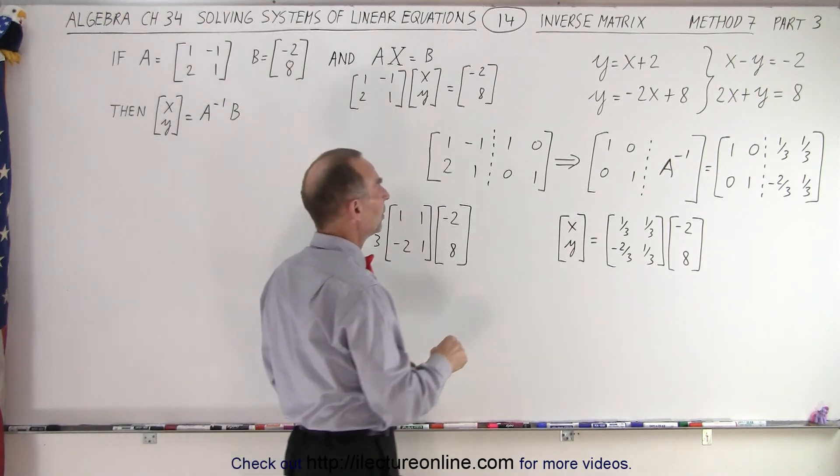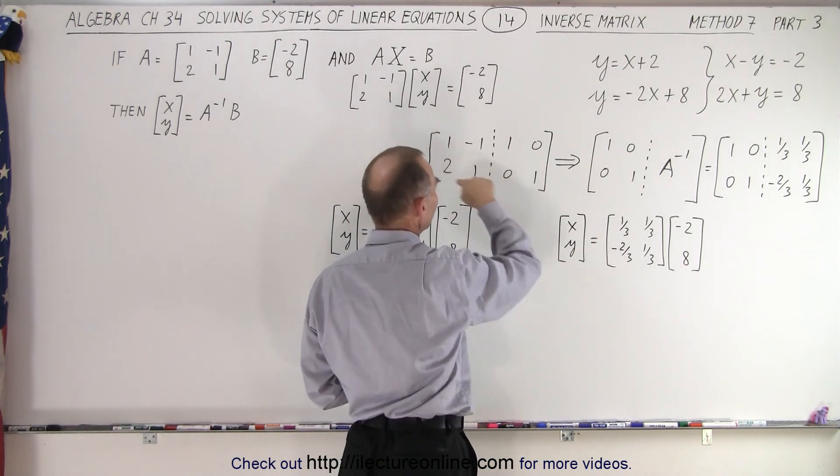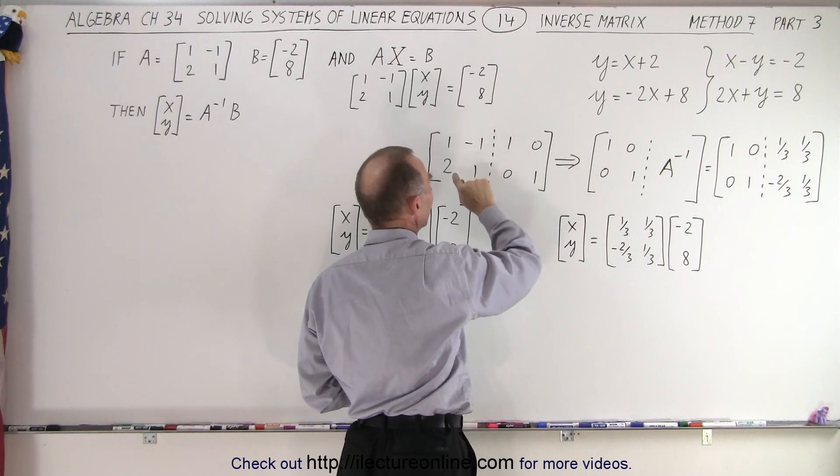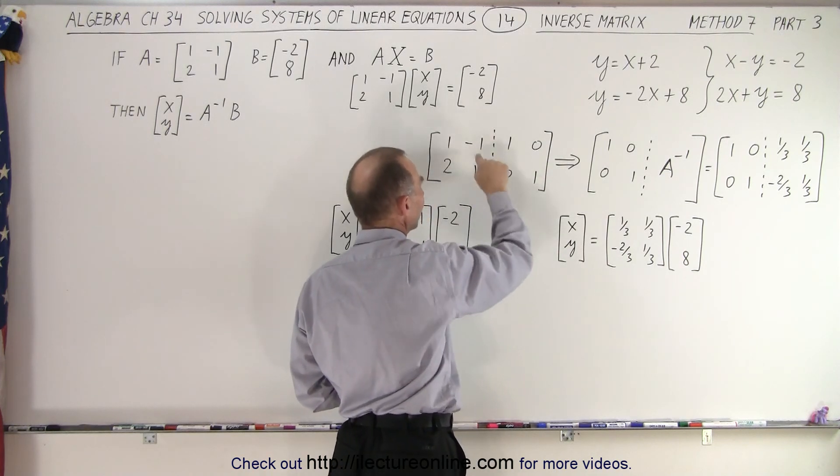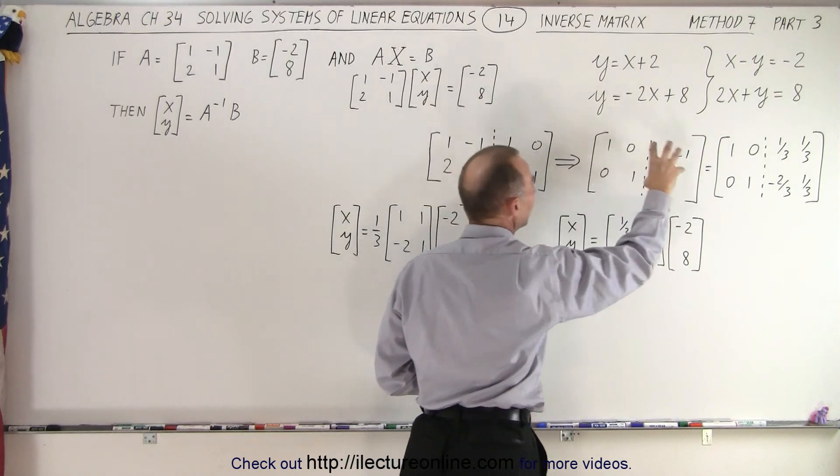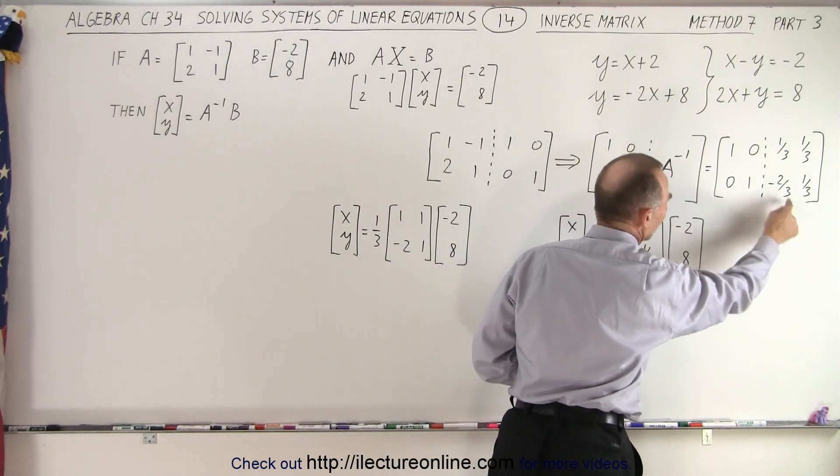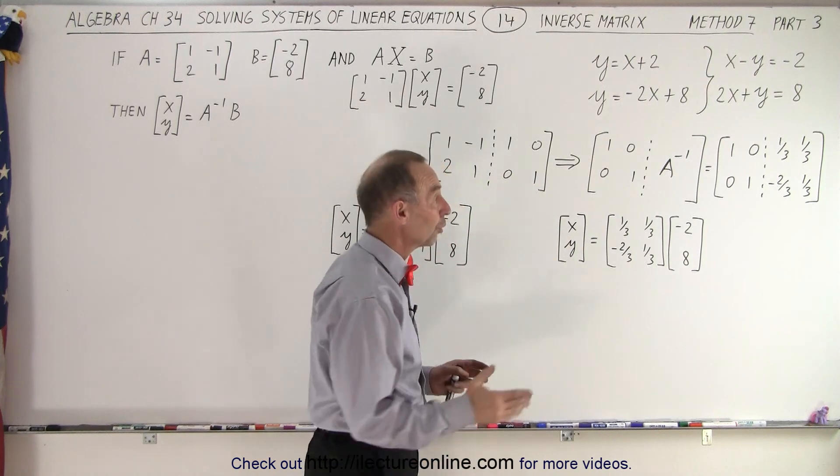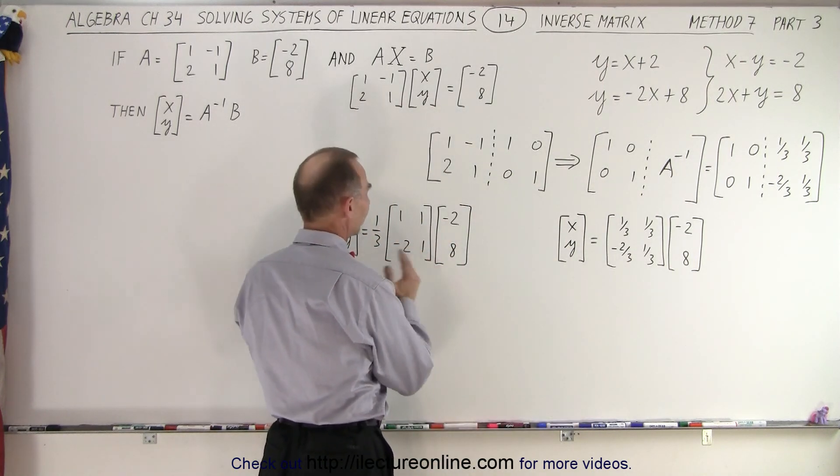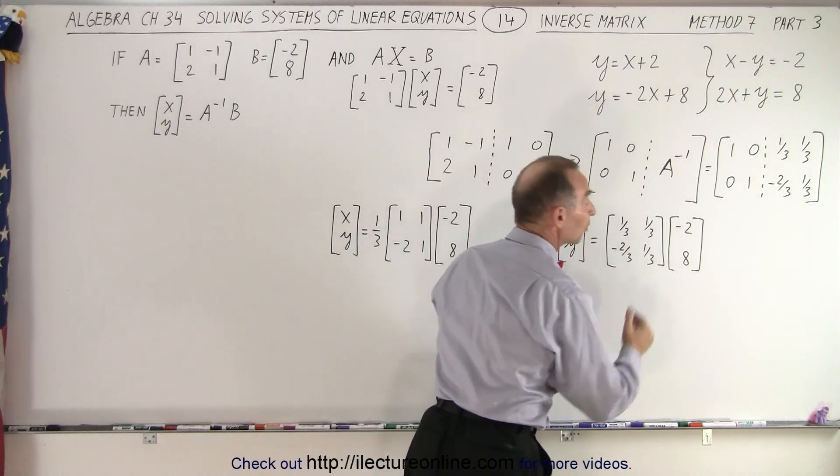So here, remember that we took the second method: we took the A matrix and the identity matrix, and then using the reduced echelon format, we changed the left side to this and then automatically this became the inverse matrix, which was this right here. But notice we could also factor out one third, so we can either write the inverse matrix like this, or we can write the inverse matrix like this.